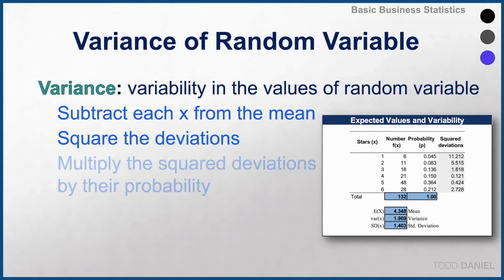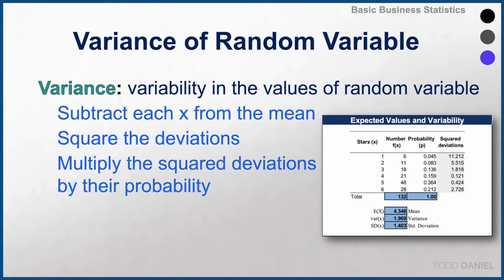We multiply the squared deviations by their probability to weight them, and then we add up those probabilities, resulting in the variance.